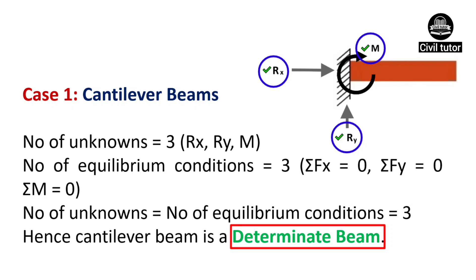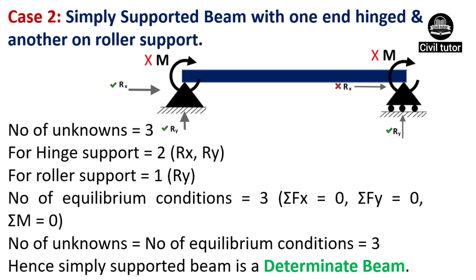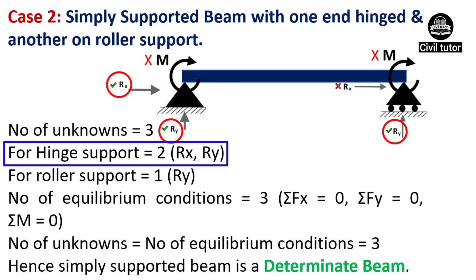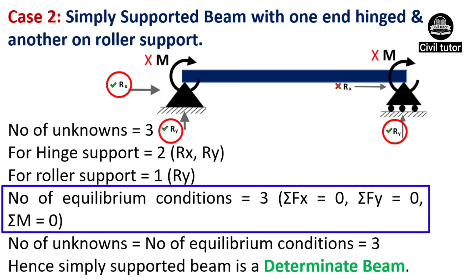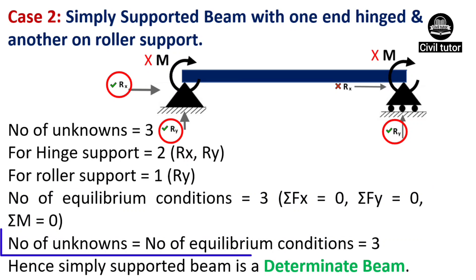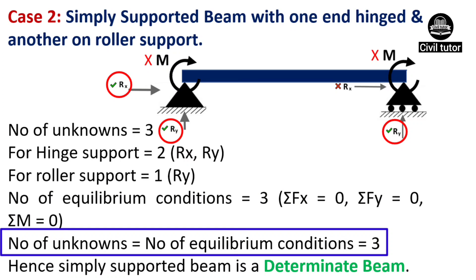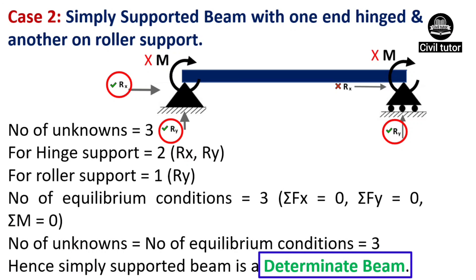Hence, cantilever beam is a determinate beam. For a simply supported beam with one end hinged and another on roller support, it has three unknowns — two for hinge support and one for roller support. The hinge support has two reactions, Rx and Ry, and the roller support has one reaction, Ry. The number of equilibrium conditions is three. So the number of unknowns equals the number of equilibrium conditions, hence the simply supported beam is a determinate beam.